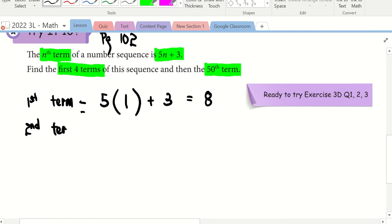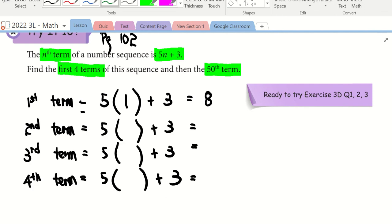Do the same for the second term. I make use of the formula 5N plus 3. But the only thing is I change the letter N to a bracket and fill in the corresponding number based on the term that I want. So if I want the second term, what number do I fill in inside the bracket? 2. Very good. Now you just have to press the calculator. What do you all get? 13. Similarly, what do I fill in in the bracket? 3.